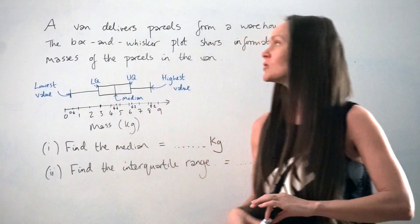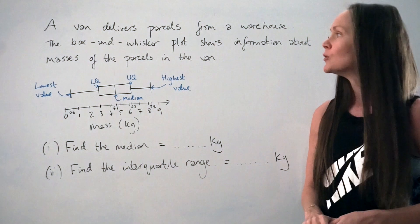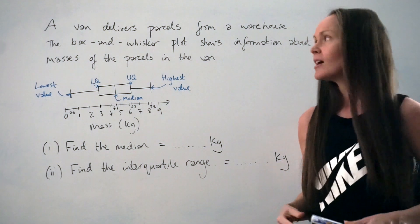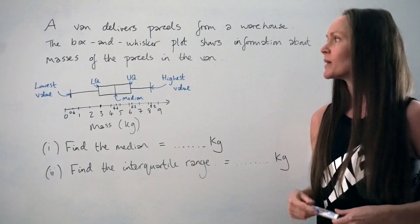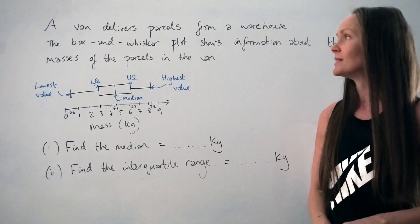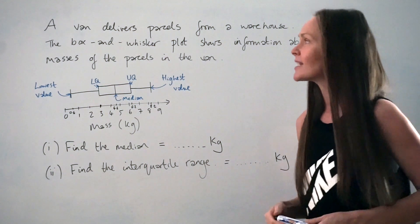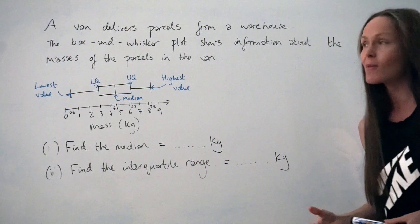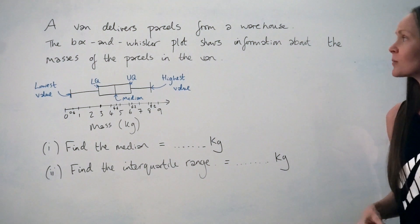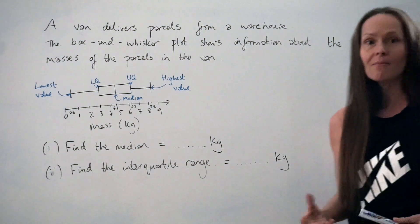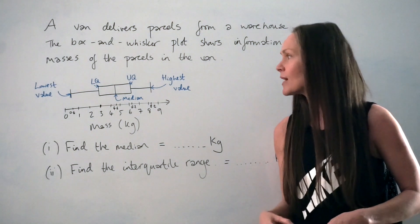Hey guys! In this video, I'm going to show you an exam question using a box and whisker plot. Sometimes they're called box plots, but in this question it's called a box and whisker plot. The question says a van delivers parcels from a warehouse. The box and whisker plot shows information about the masses of the parcels in the van.